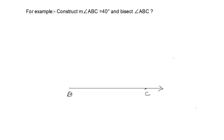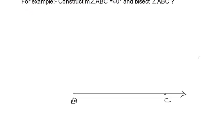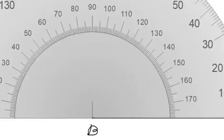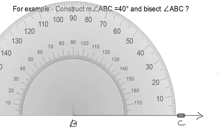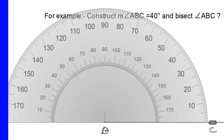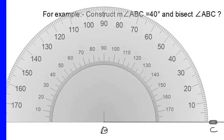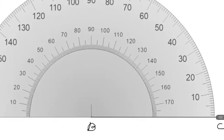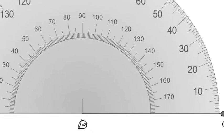Since B is the Vertex, we must draw a 40 degree angle at that point. Put the center of protractor on B, place the protractor so that the baseline lies on Arm BC. Count division starting from 0 near point C. Mark a point with pencil at the division dash short 40 degree.